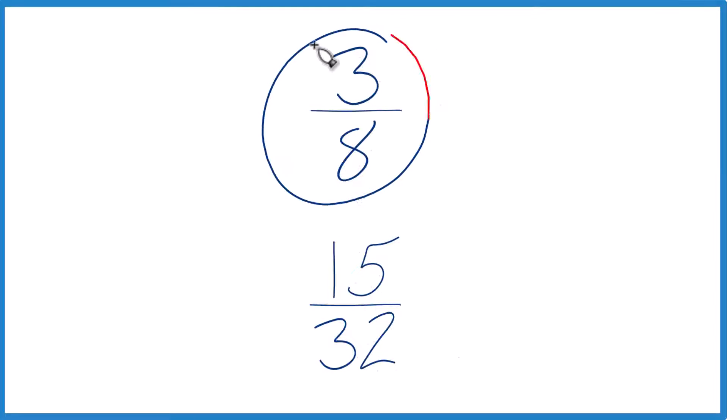Okay, let's figure out which is greater, 3 eighths or 15 32nds.